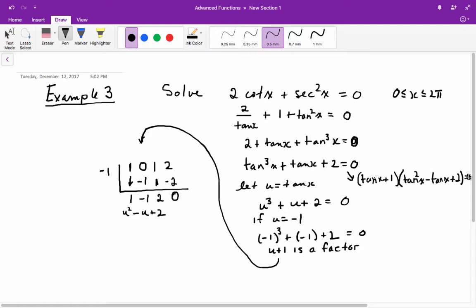Now, if you try to set the second bracket equal to 0, you will see that there are no solutions. The discriminant will actually end up being a negative. So, we end up with just the tan of x plus 1 equals 0, which means the tan of x equals negative 1.